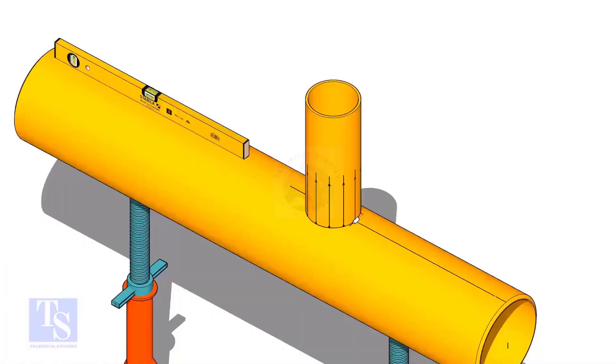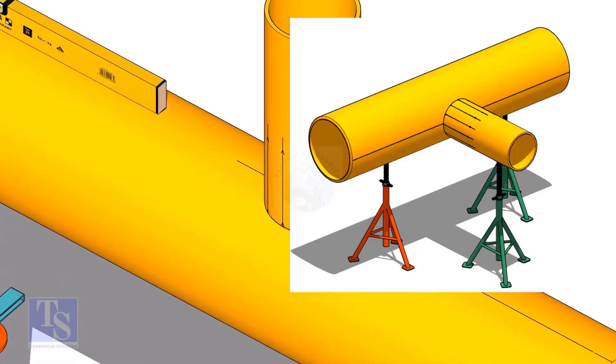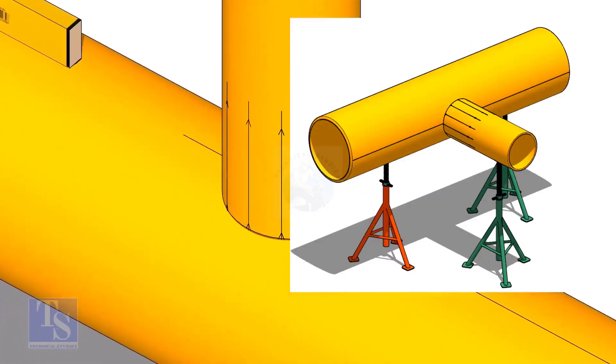Tack weld the branch on the header just to stand it vertically. If the pipes are large, you can do it in the horizontal position also.